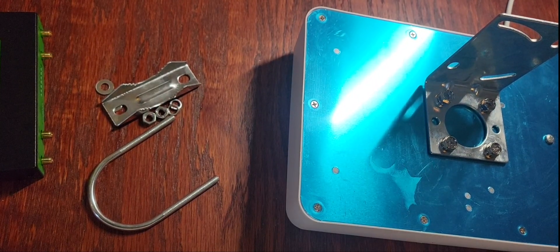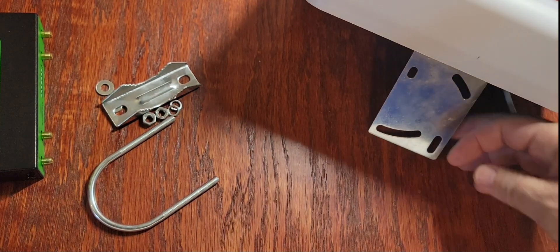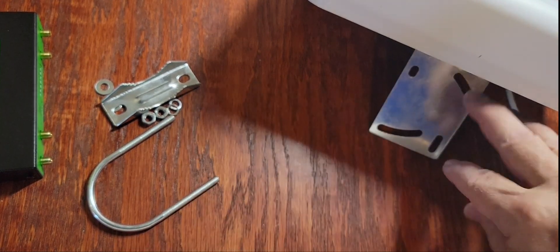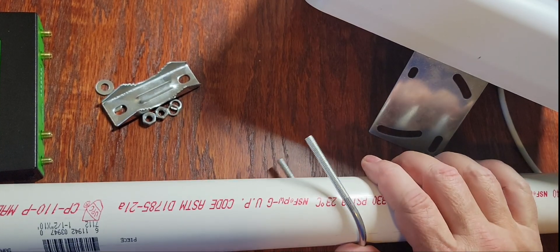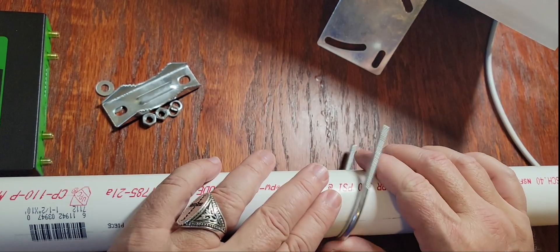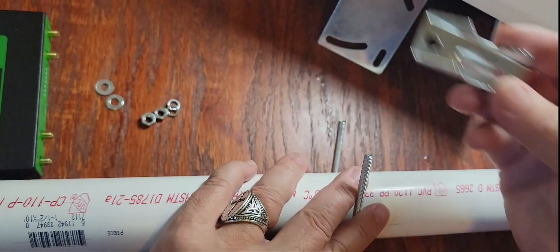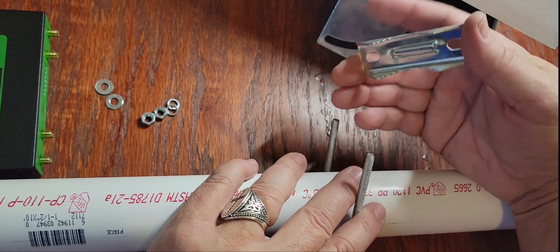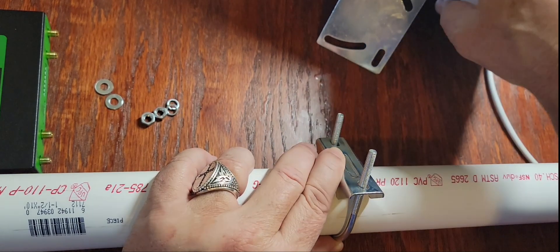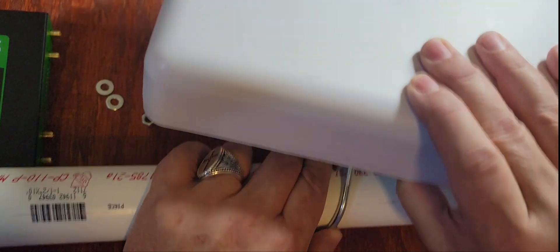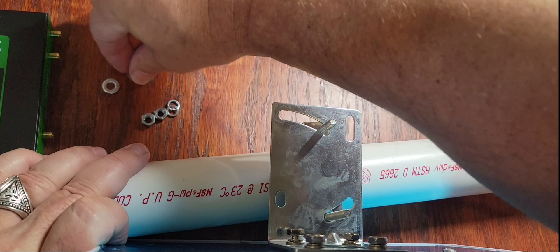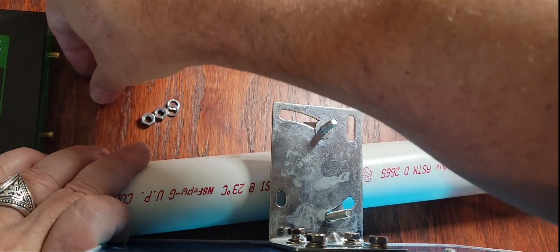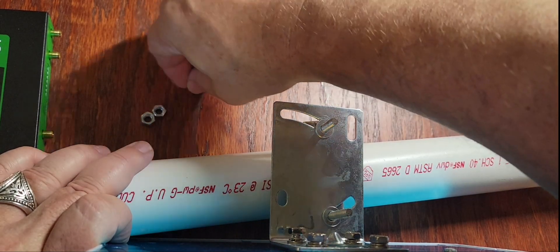This is generally where we get the greatest amount of confusion from people when they go to mount this to this plate. This simply goes around whatever pipe you're going to be using to mount it to. This plate goes in so that you've got this little curved surface facing your pipe. You've got the bracket like this, drop on your regular washer, lock washer.